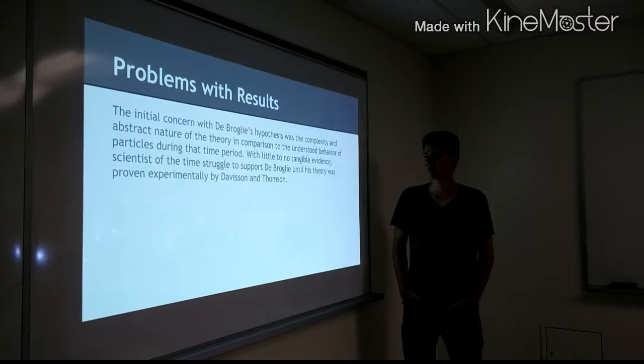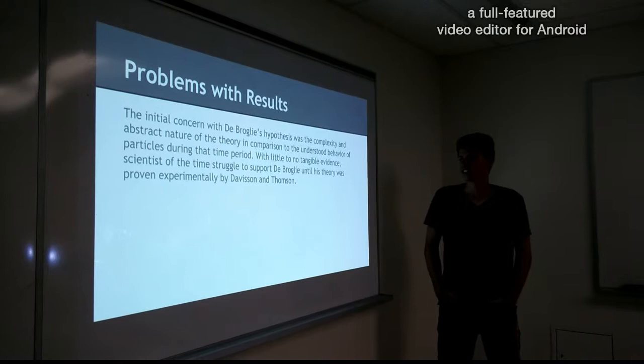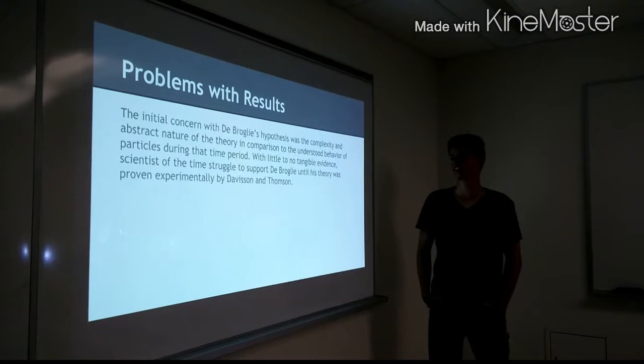There were some problems with the results, however. The initial concern with De Broglie's hypothesis was the complexity and abstract nature of the theory in comparison to the understood behavior of particles during the time period. With little to no tangible evidence, scientists of the time struggled to support De Broglie until his theory was proven experimentally by Davison and Thompson.